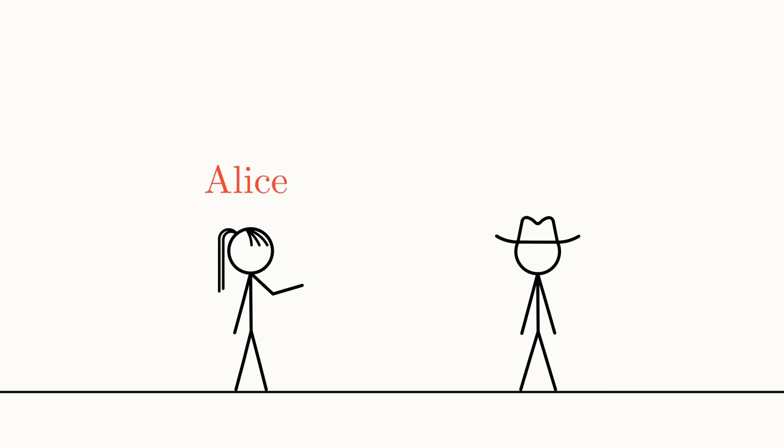I'd like you to meet Alice and Bob. Despite being very different people, we can still refer to them both as a person.